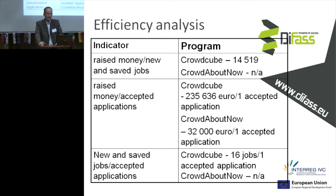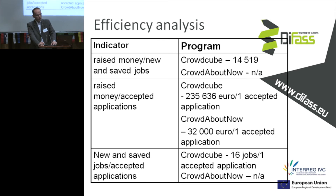Now some indicators about efficiency. We have raised money relative to new and safe jobs: in the case of Crowdcube, over 14,000 Euro. We don't have any data for Crowdabout Now on this metric. For raised money per accepted application, we have about 235,000 Euro per one accepted application in the case of Crowdabout Now. For new and safe jobs per accepted application, Crowdcube has 16 jobs per one accepted application, but unfortunately we don't have data about new and safe jobs for Crowdabout Now.